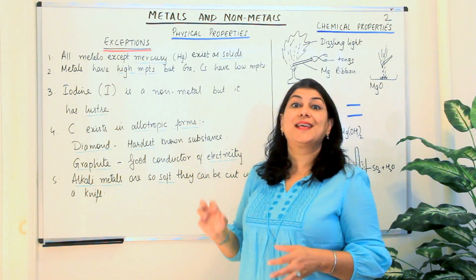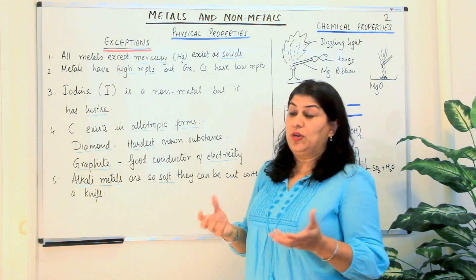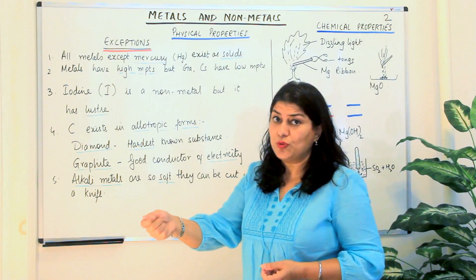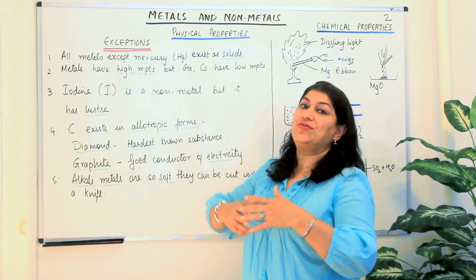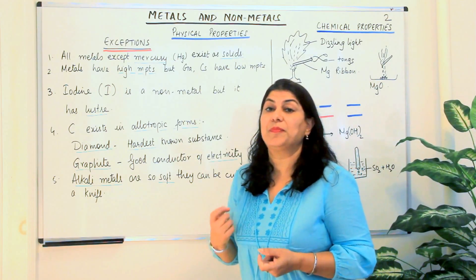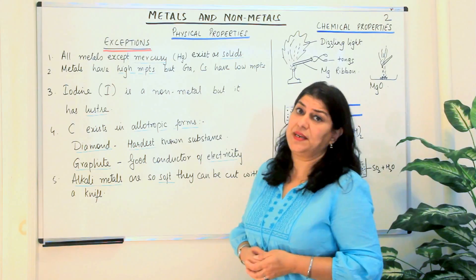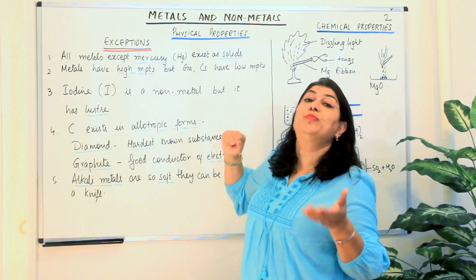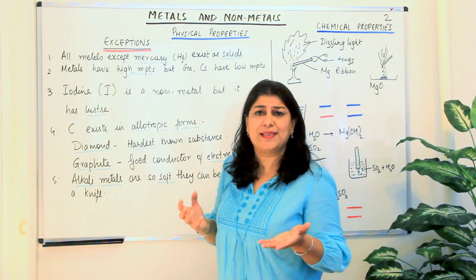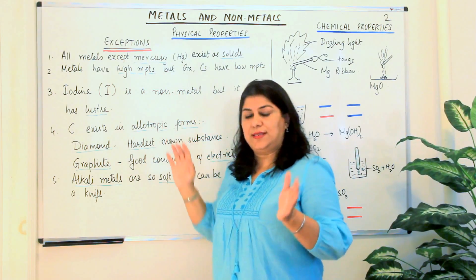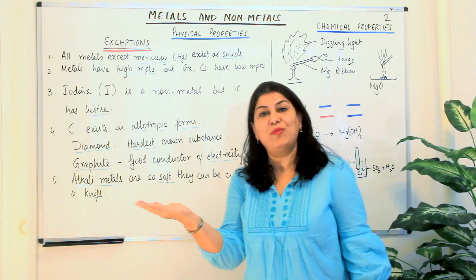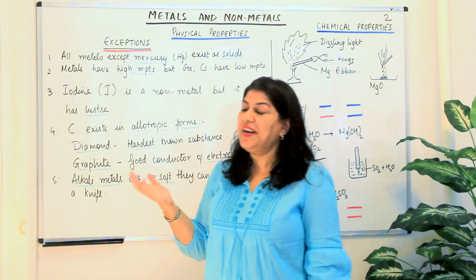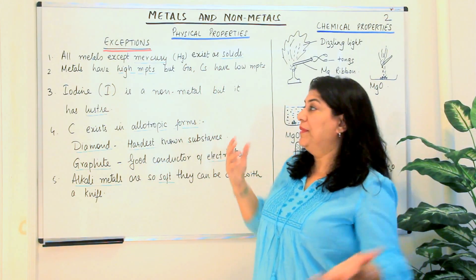The second exception is that metals have high melting points and boiling points. If you put a spoon into a flame and try to melt it, it requires a very high temperature. Yet we have exceptions: gallium and caesium are two metals which have such low melting points. They are not liquids at room temperature — they are solids — but if you hold them in the palm of your hand, just by the heat of your palm, they start melting. So they have very low melting points in comparison to other metals.